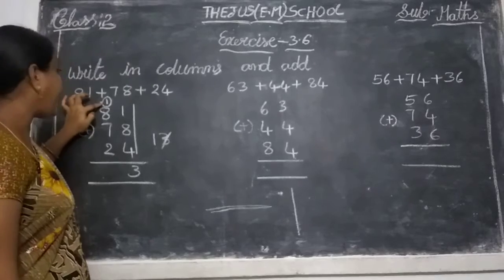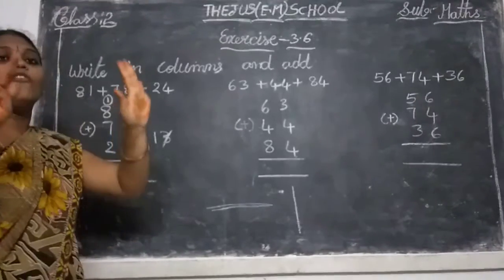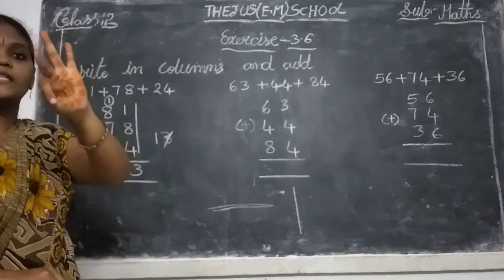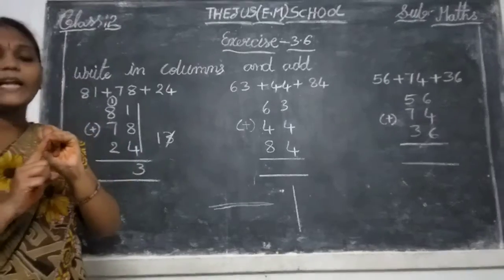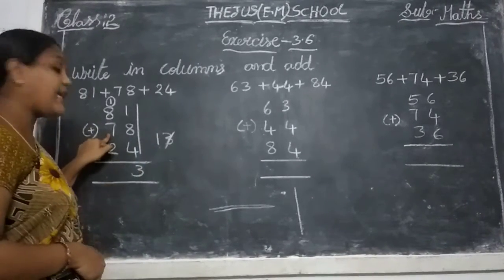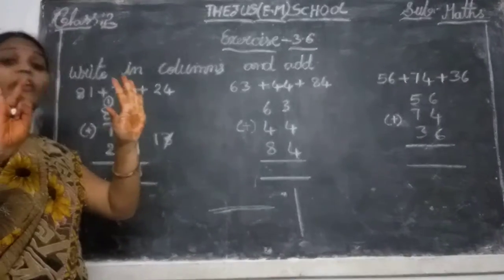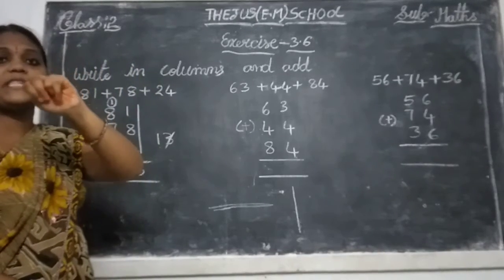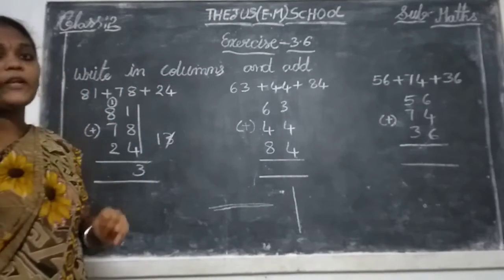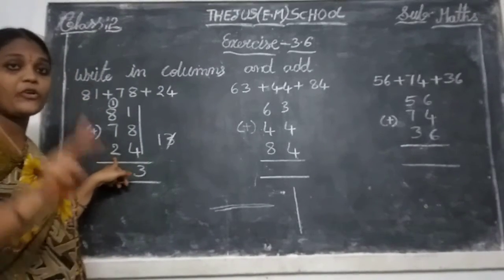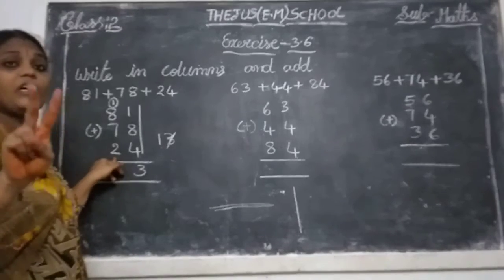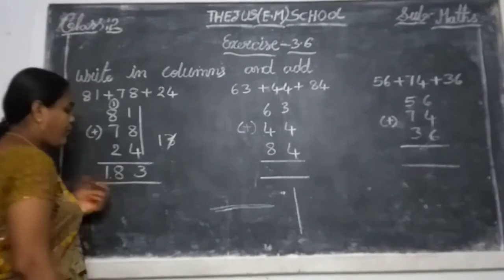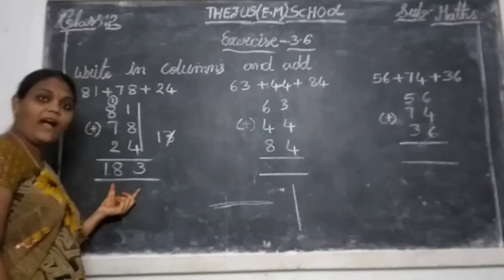Keep the carry in mind. Count: 1, 2, 3, 4, 5, 6, 7, 8, 9. Keep 9 in your mind, take 7 fingers: count 10, 11, 12, 13, 14, 15, 16. Keep 16 in your mind, take 2 fingers: count 17, 18. Write 18 here. So 183 is the answer.